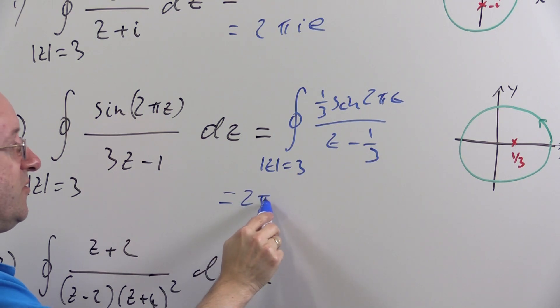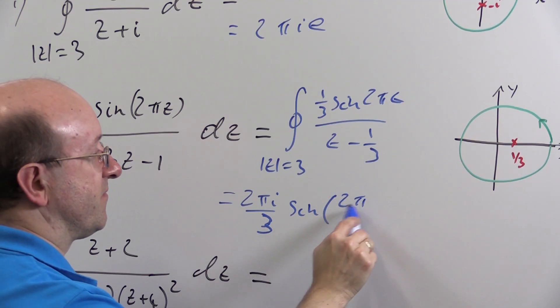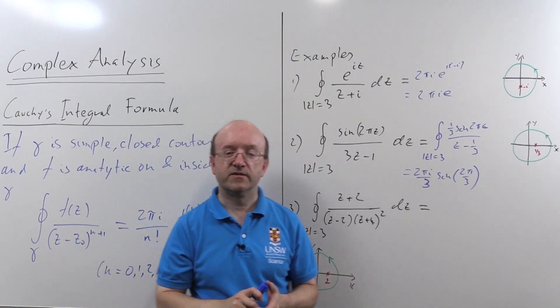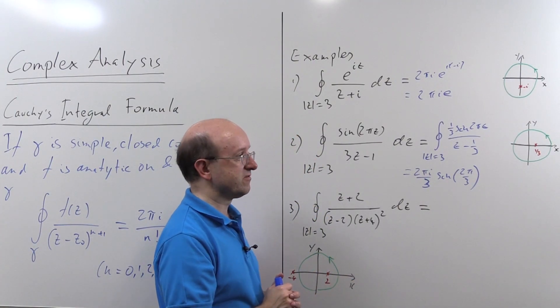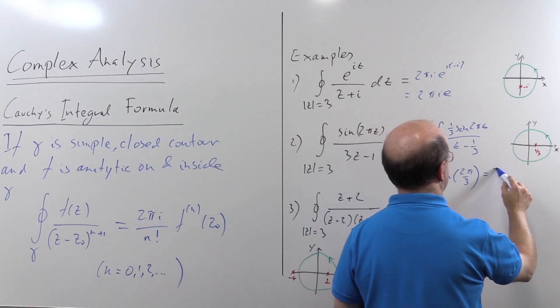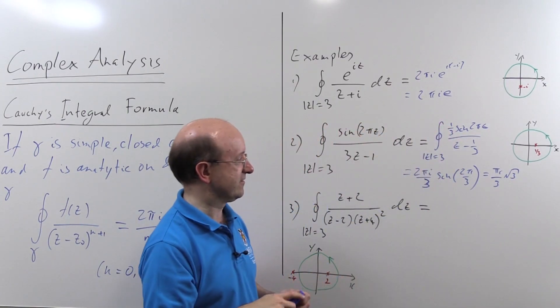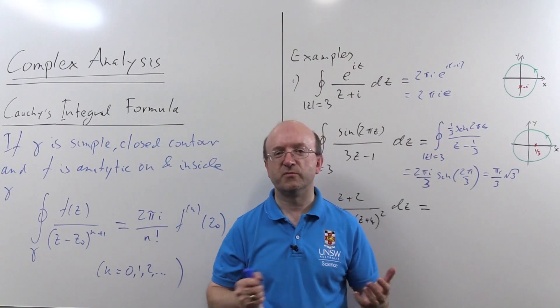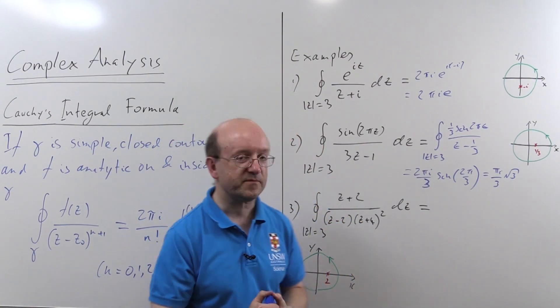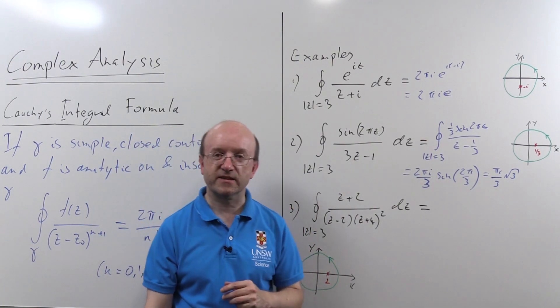And now it's in exactly the correct shape. We just have to evaluate sine 2 pi z when z is a third, multiplying by the appropriate multiples of pi, of course. So that's 2 pi i. Again, 0 factorial times a third times sine of 2 pi upon 3. And sine 2 pi upon 3 is, of course, root 3 upon 2. So we're going to get pi i over 3 times root 3. Canceling off the 2's, 2 pi i over root 3 if you want. So that's our second example.